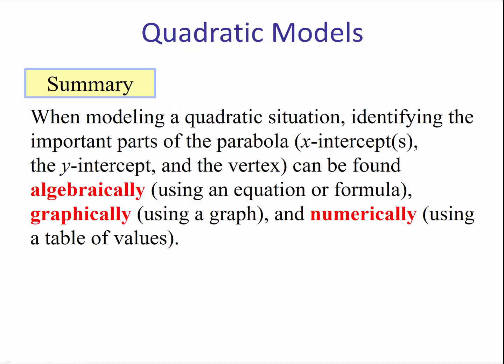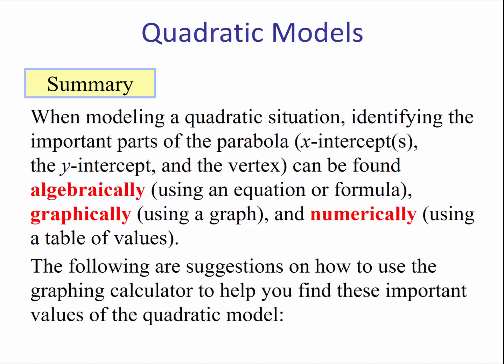Summary: when modeling a quadratic situation, identifying the important parts of the parabola—the x-intercepts, y-intercepts, and the vertex—can be found algebraically, that's using an equation or a formula; graphically, that's using a graph; and numerically, using a table of values. The following are suggestions on how to use the graphing calculator to help you find these important values of the quadratic model.